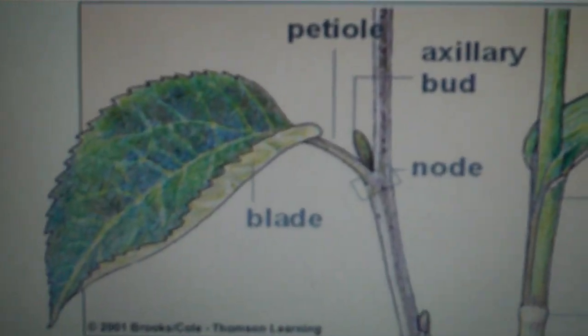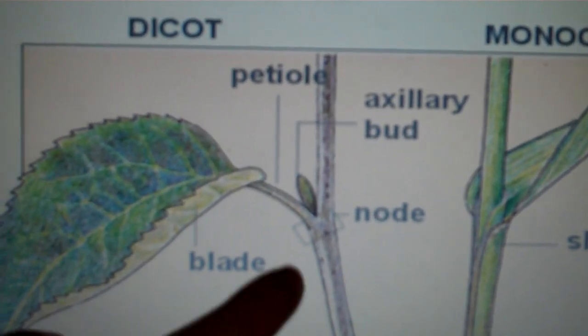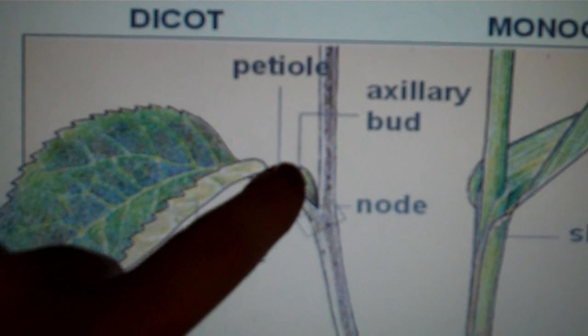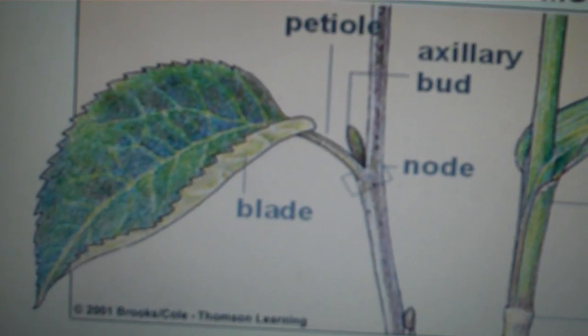Now a dicot leaf is what we are familiar with. We have our stem, our node, our axillary bud, our petiole, and our leaf. The leaf is commonly referred to as a blade.